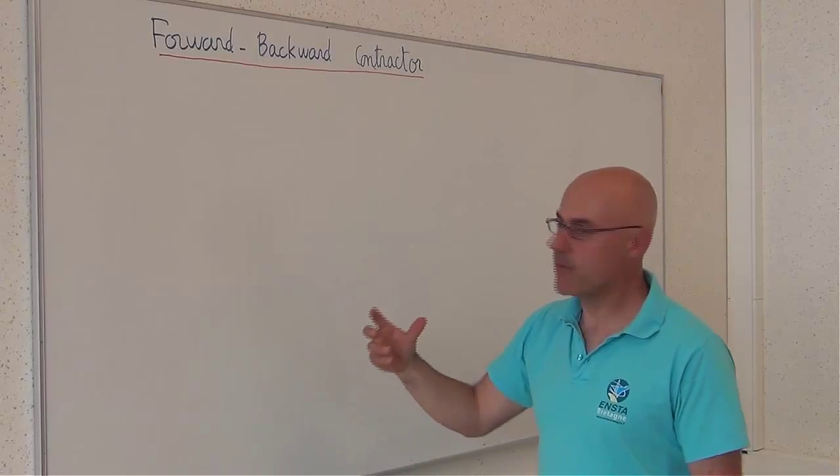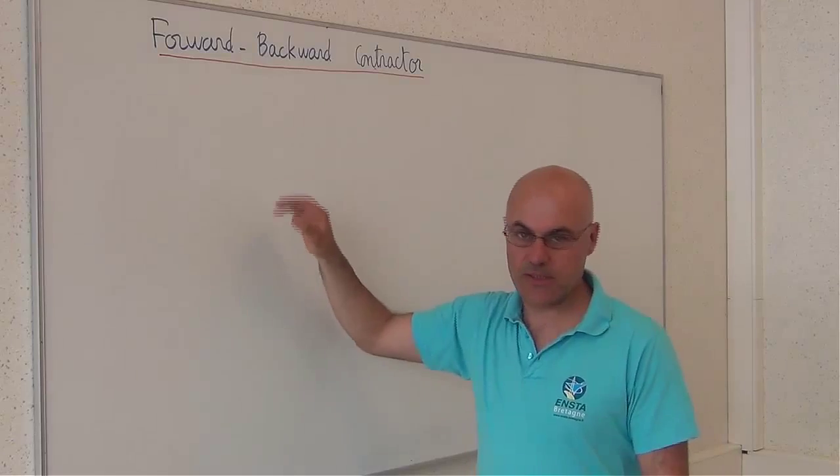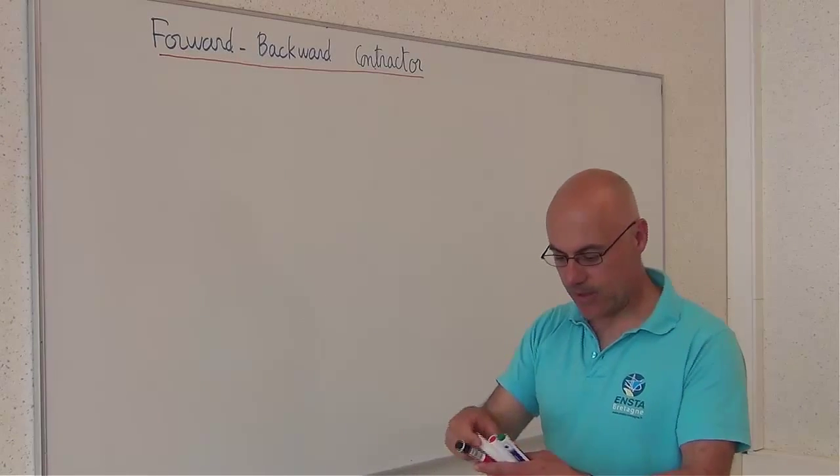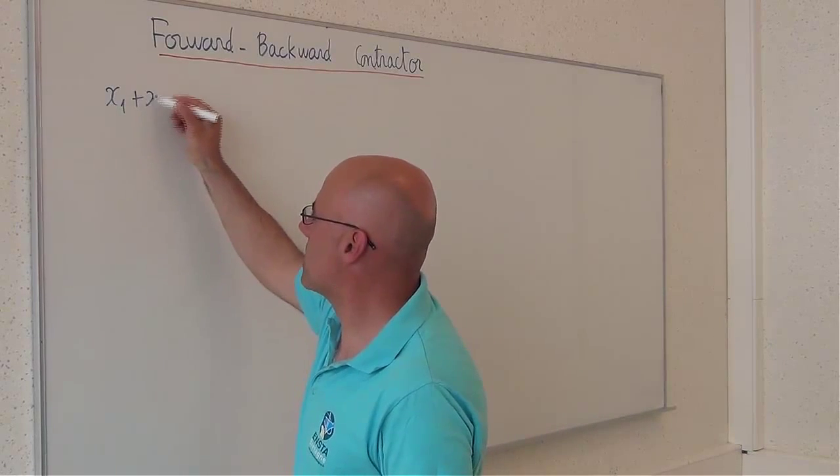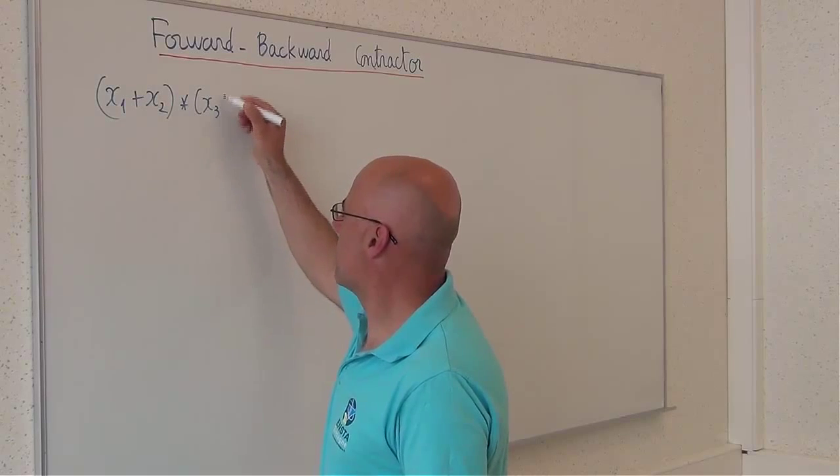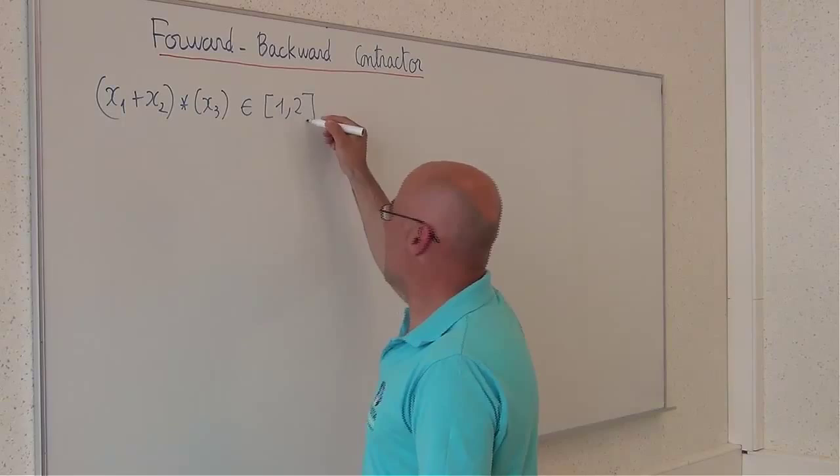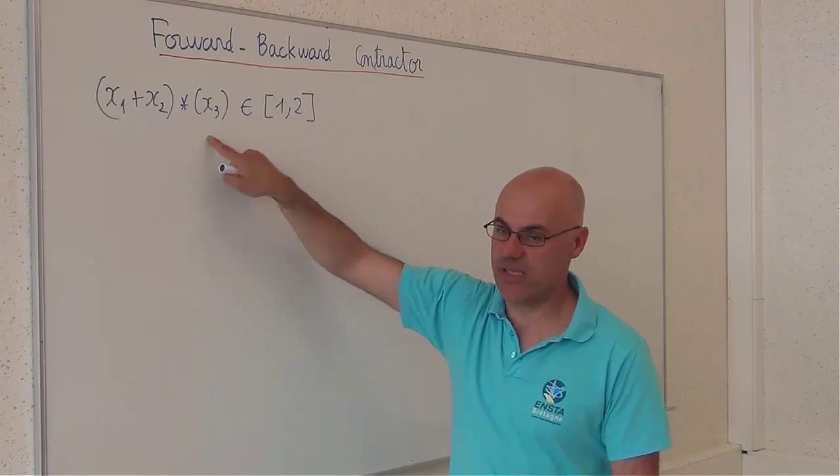An efficient way to produce contractors for complex constraints is to use the forward-backward contractor. Let me consider an example: x1 plus x2 times x3 belongs to [1,2]. I want to build a contractor associated with this constraint.